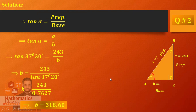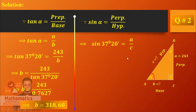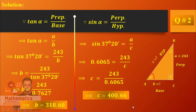One side is found. Now for side C, we use sin alpha which equals perpendicular over hypotenuse. The perpendicular is 243 and the hypotenuse is C. So sin(37°20') equals A over C. Cross multiply and simplify — your answer is C equals 400.66.